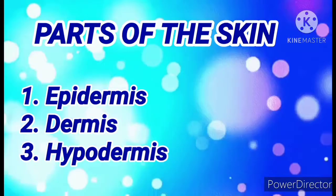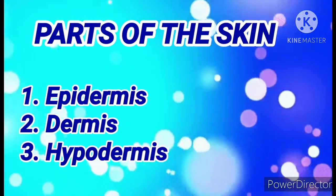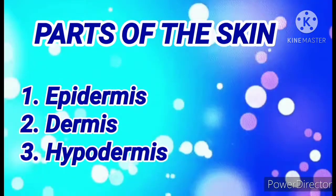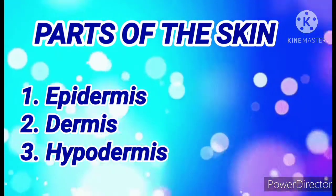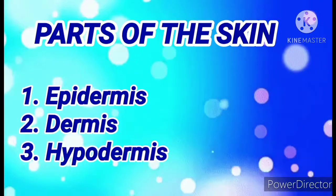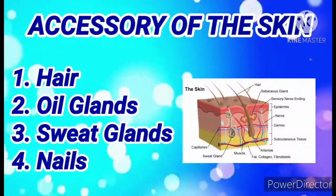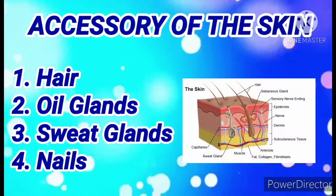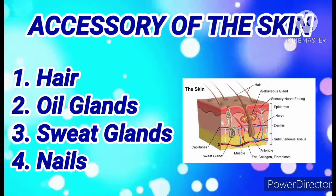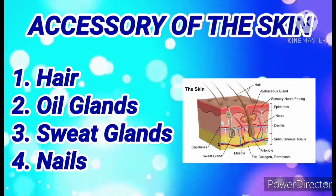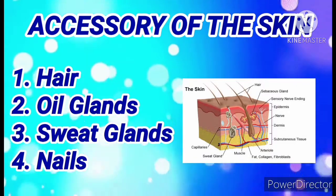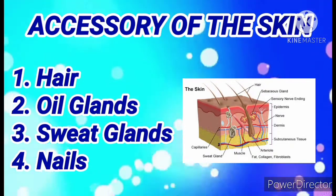The third layer is the hypodermis, located directly below the dermis. It contains fats and loose connective tissues, and this layer also provides insulation of heat and cushioning of the skin. The accessory structures of the skin include the hair, the oil glands which coat the surface of the hair to prevent water loss, the sweat glands which are responsible for releasing sweat, and the nails.